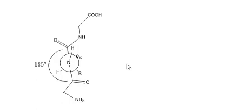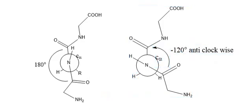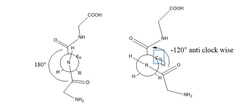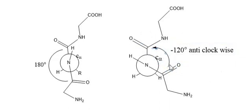Whenever the phi angle is given as minus 120 degrees, you need to rotate the front nitrogen and its bonds without changing the atoms on the back alpha carbon. When the front nitrogen is rotated anti-clockwise until the angle between the two carbonyl groups is 120 degrees, that is considered as minus 120 degrees. Rotation in the anti-clockwise direction gives a minus sign.